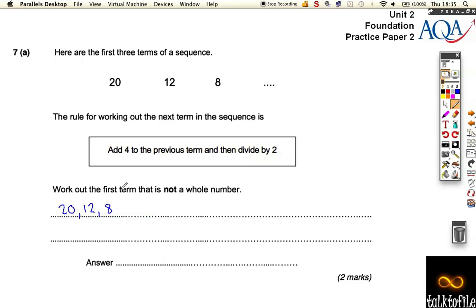20, 12, 8. We need to add 4, which is 12, divided by 2, which is 6. Add 4 is 10, divided by 2 is 5. We've still got whole numbers. Add 4 is 9, divided by 2 is 4.5. So that's the one that we want. It's the first one that's not a whole number.